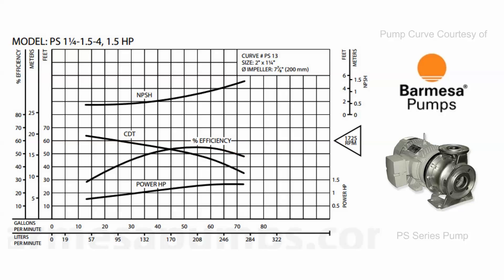This curve also shows the horsepower requirement to achieve the designated flow and head rating. They show the horsepower rating on the right-hand side — half horsepower, one horsepower, and one and a half horsepower. You can see that there's really no reason you would want a half horsepower, because at no point does half horsepower achieve the workload of the pump's capability. Once we get into one horsepower, that motor can handle from one part of the curve to another without overloading.